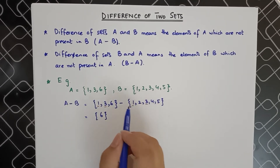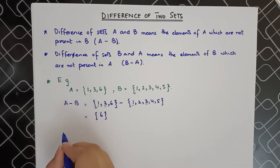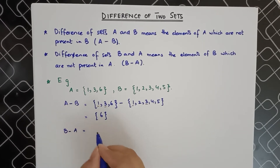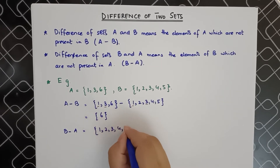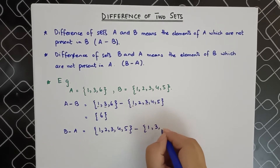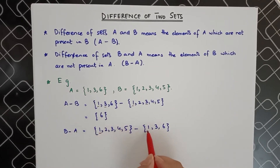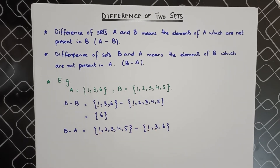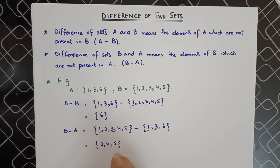Now let's calculate B minus A. We write B first: {1, 2, 3, 4, 5} minus {1, 3, 6}. We subtract the elements of A from B: 1 is common, and 3 is common. The elements left in B are 2, 4, and 5 — these are the elements of B which are not present in A. So B minus A equals {2, 4, 5}.